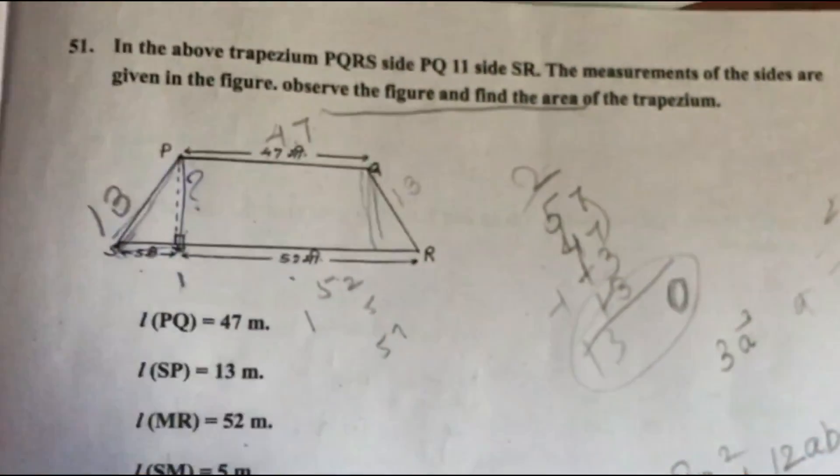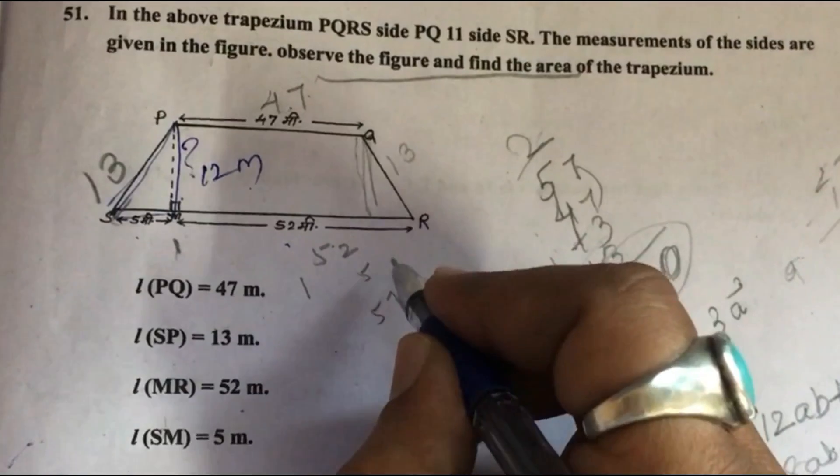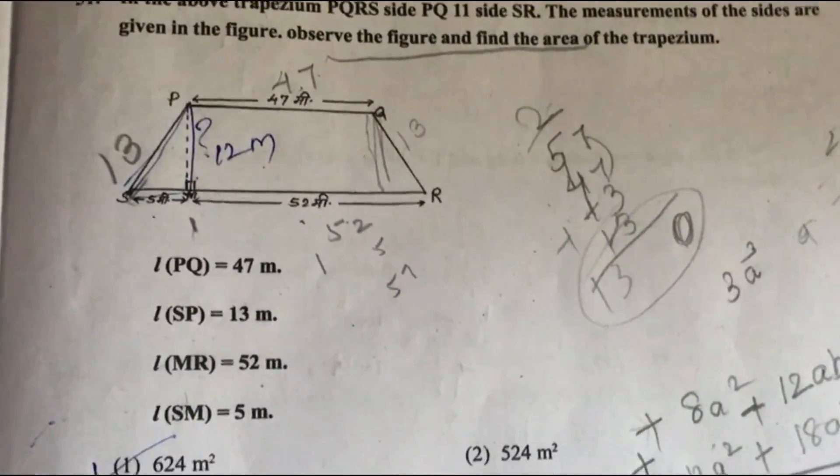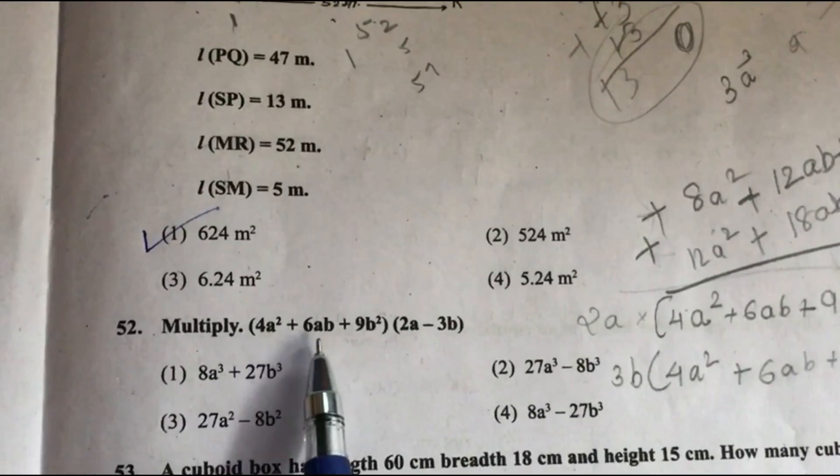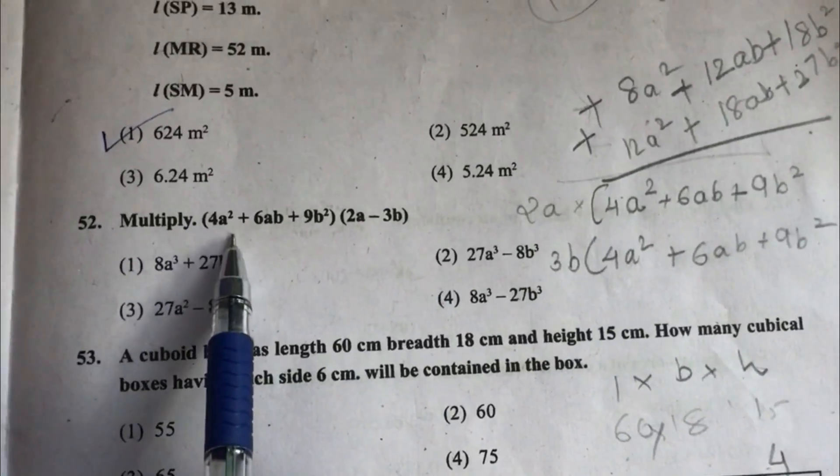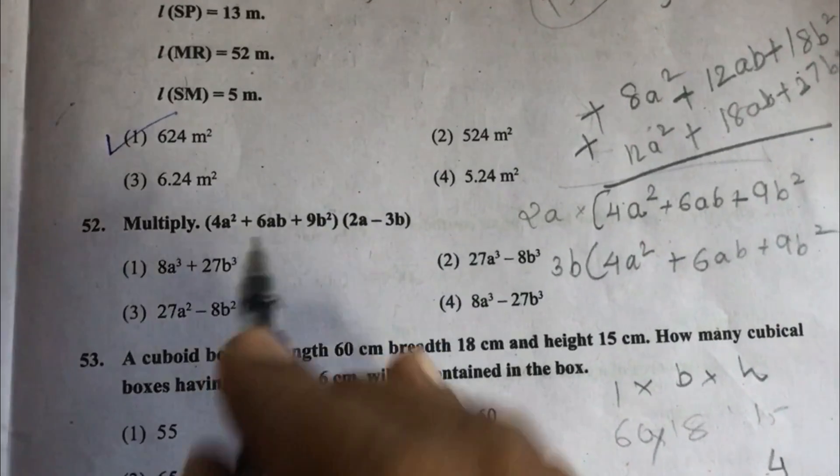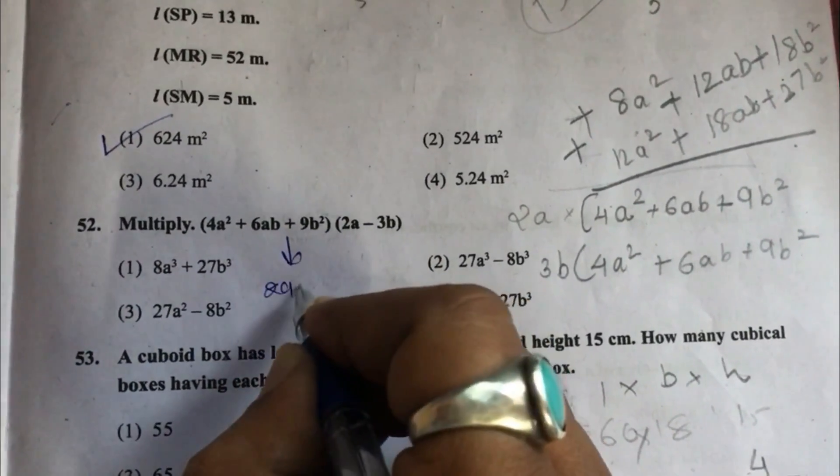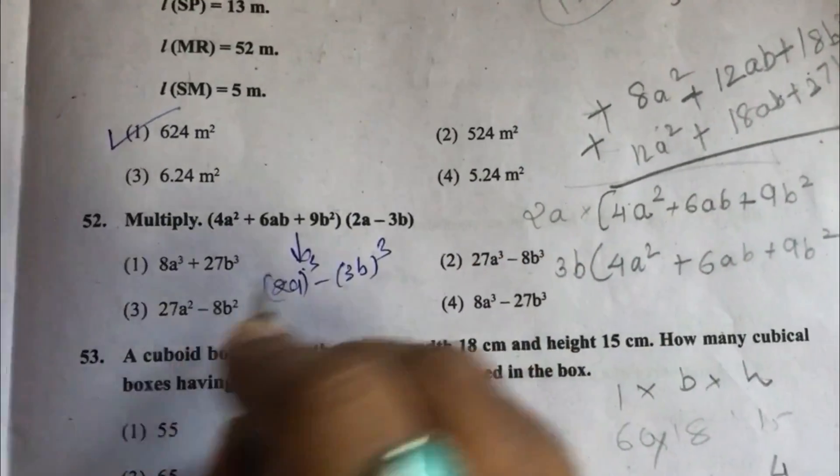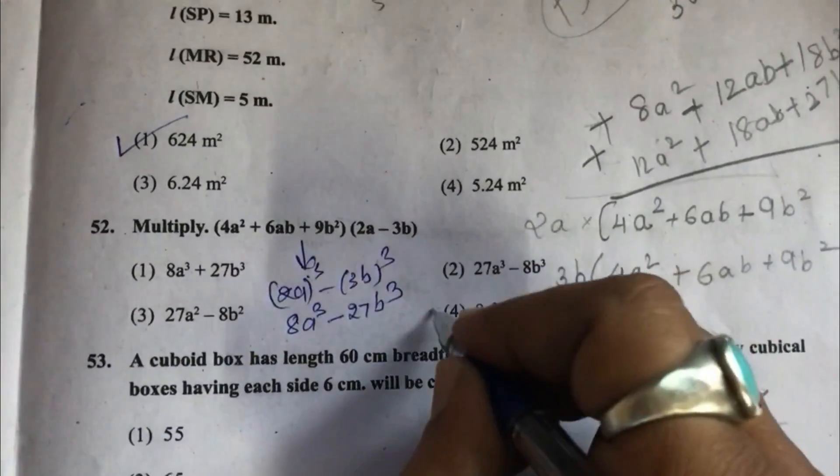Question 51-52: Trapezium area problem. In this triangle, we will get height 12 meter. By using area of trapezium formula, we will get the answer. We will get option 1, 624 meter square. Question 53: Multiply 4a square plus 6ab plus 9b square into 2a minus 3b. When we solve this, we will get this equation. So this is 8a cube minus 27b cube, option 4.